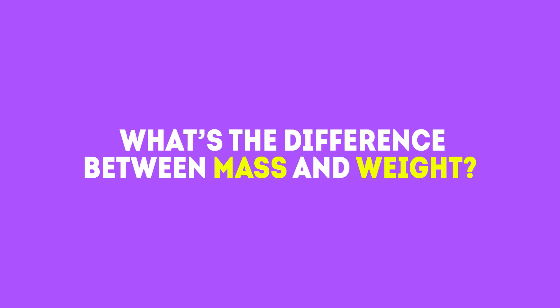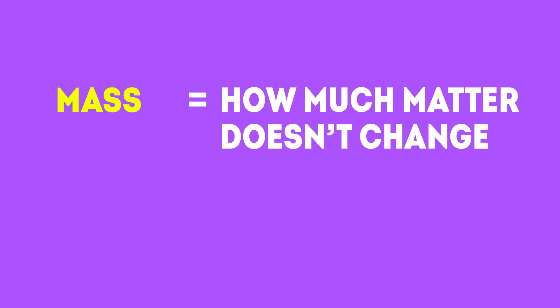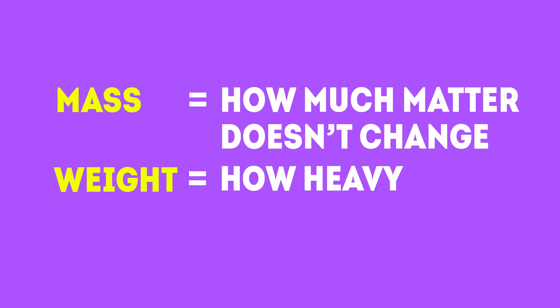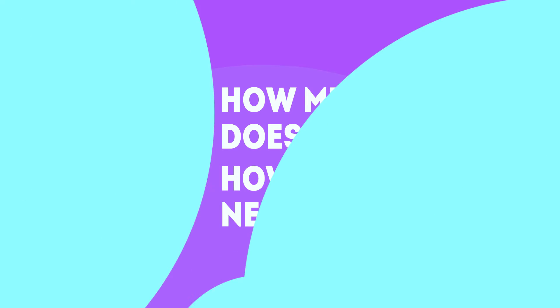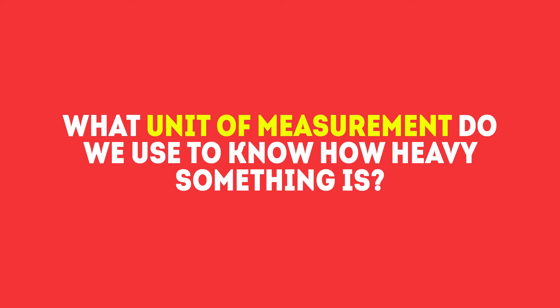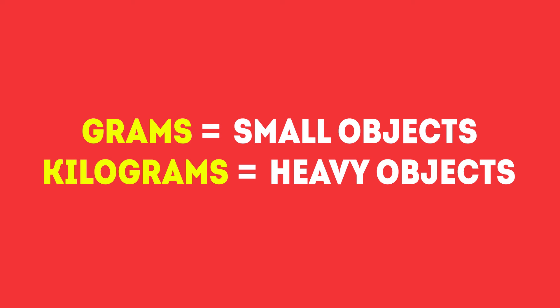What's the difference between mass and weight? Mass is the amount of matter inside an object — it doesn't change. Weight is how heavy something is and needs gravity. What unit of measurement do we use to know how heavy something is? You got it! We use grams for small objects and kilograms for heavy objects.